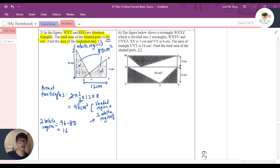Now they are asking for the area of the unshaded part, which is only one white region. So we just divide by 2. One white region is 16 divided by 2, which is 8 cm squared.